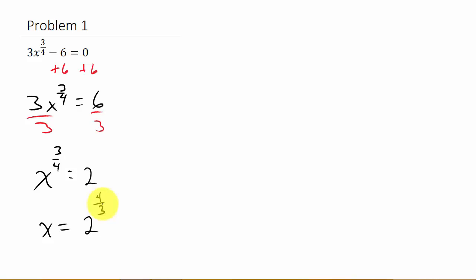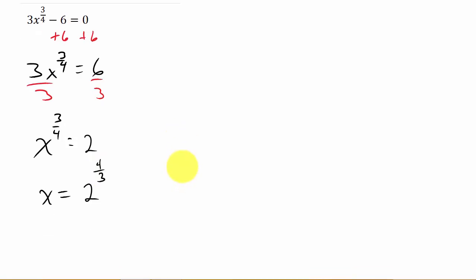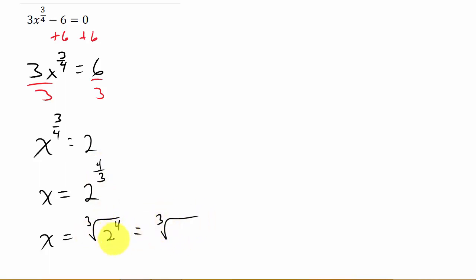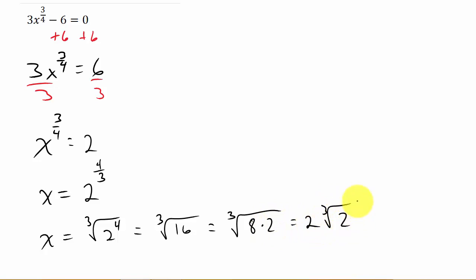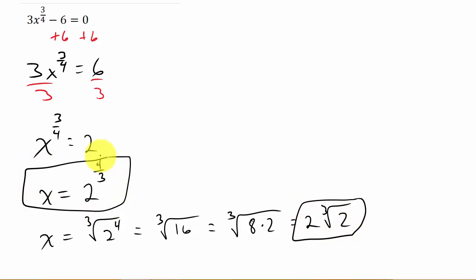We can also write this in radical form. x equals the cube root of 2 to the 4th, which is the cube root of 16. That reduces to the cube root of 8 times 2, giving us 2 times the cube root of 2. You could leave the answer as 2 to the 4 thirds or in this radical form.